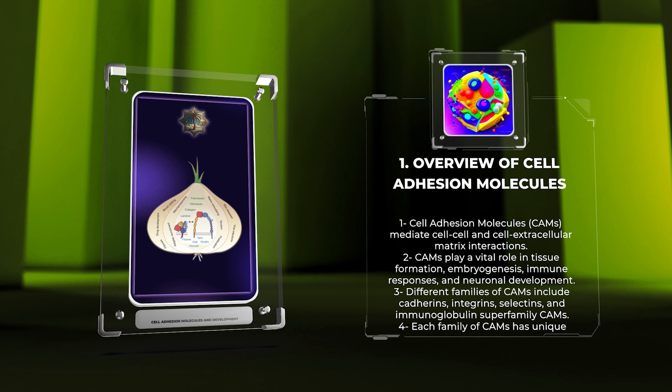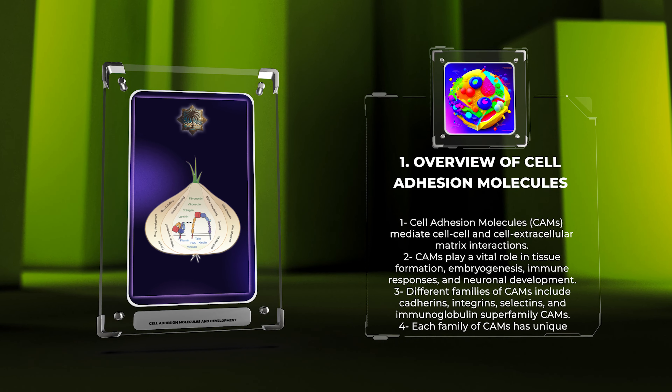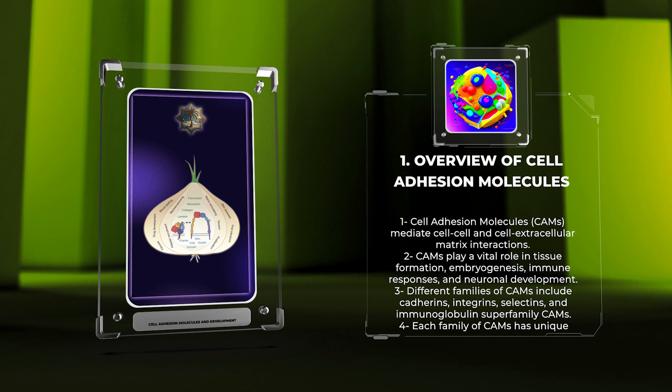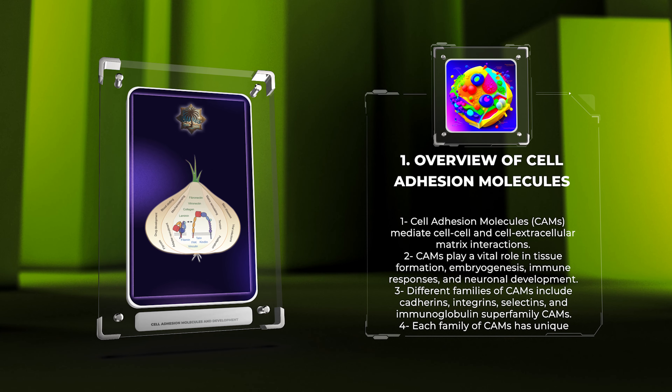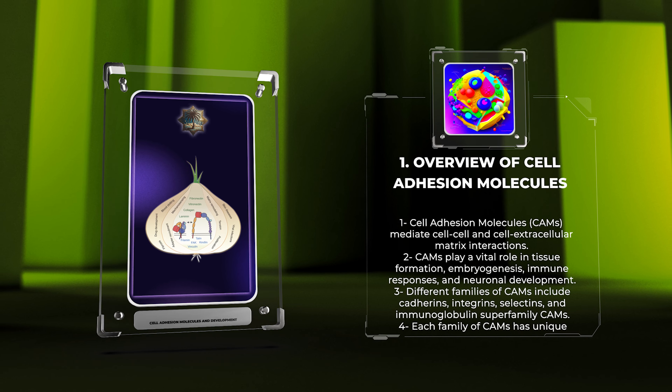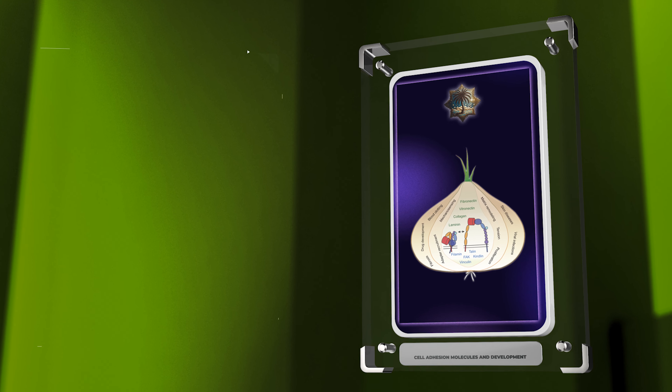There are different families of CAMs, including cadherins, integrins, selectins, and immunoglobulin superfamily CAMs, each having unique functions and characteristics.